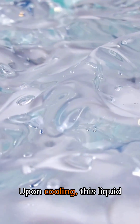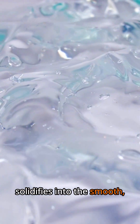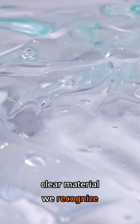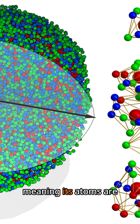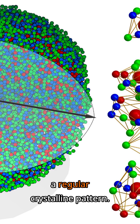Upon cooling, this liquid solidifies into the smooth, clear material we recognize as glass. Unlike most solids, glass is an amorphous solid, meaning its atoms are arranged randomly, not in a regular crystalline pattern.